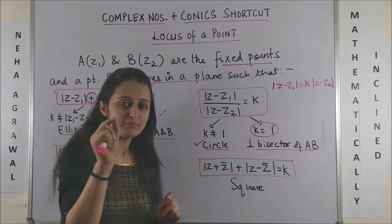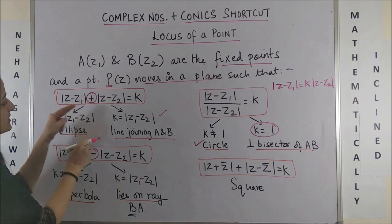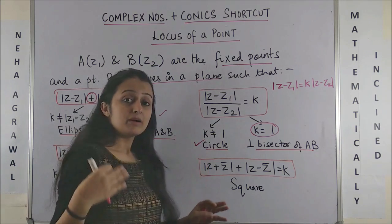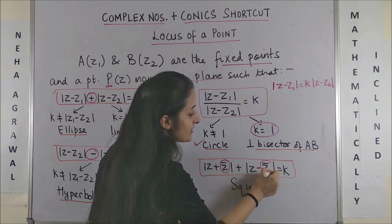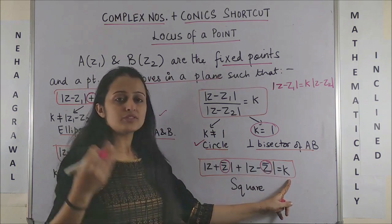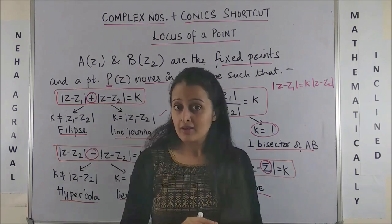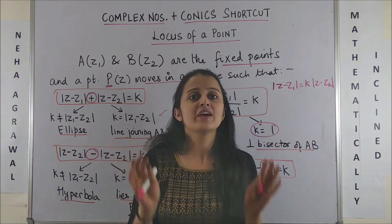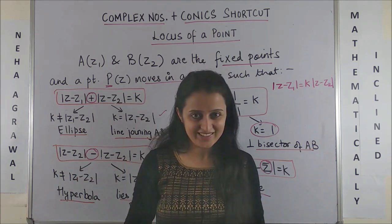Lastly, this is a very special case. It's very similar to this ellipse equation, but in place of Z₁ and Z₂, you specifically have the conjugate, |z+z̄| = K, then in that case it has to be a square. Make a note of all these very carefully and then trust me, all the questions would become Bacho Ka Khehl.